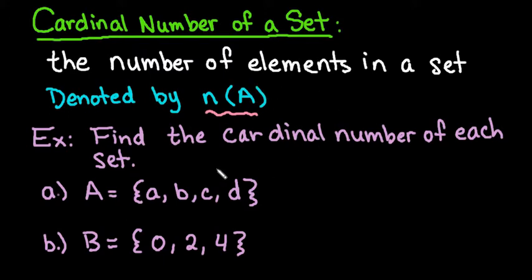Okay, so I have a couple examples down here for us to try. Find the cardinal number of each set. So to find the cardinal number of set a, we simply count how many elements are in there. So since this contains the letters a, b, c, and d,